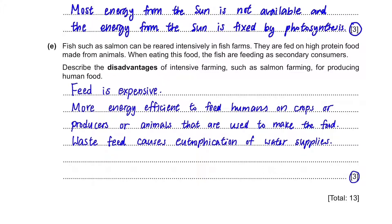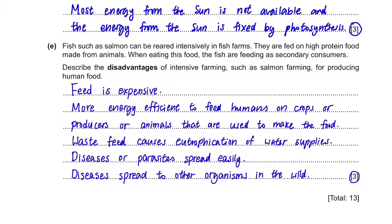Think about how they are reared — they are put in captivity, with a large number placed in a small space. If a disease or parasite is present in one part of the farm, it will spread easily, and furthermore this can spread to other organisms in the wild. So you can have two points from this: diseases or parasites spread easily, and diseases may spread to other organisms in the wild.